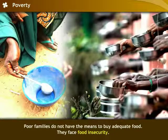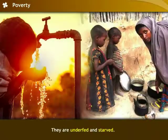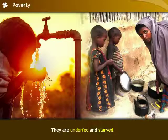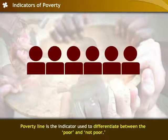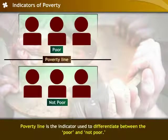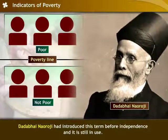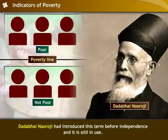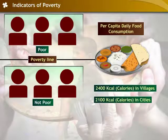Poor families do not have the means to buy adequate food. They face food insecurity. Most of the poor people are underfed and starved. The poverty line is the indicator used to differentiate between the poor and not poor. The term was introduced by Dadabhai Naoroji before independence and is still in use. The poverty line is fixed depending upon the per capita food consumption of a person. People unable to earn the minimum calorie requirement fall below the poverty line.